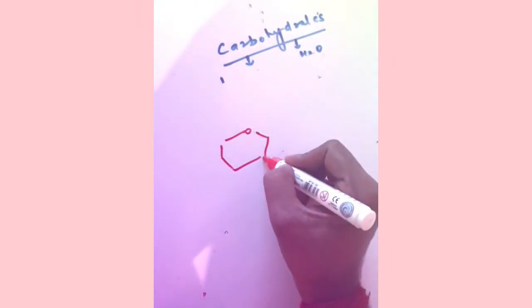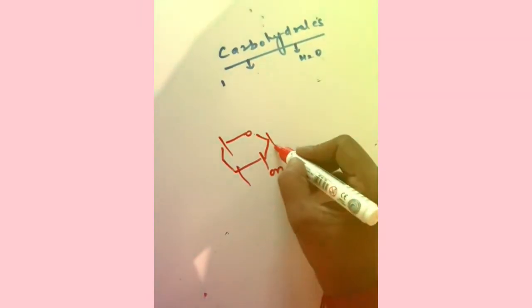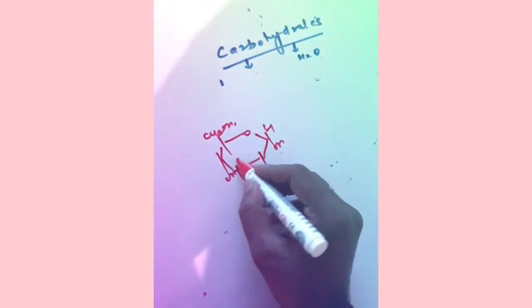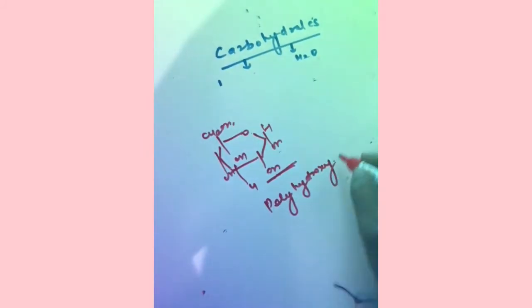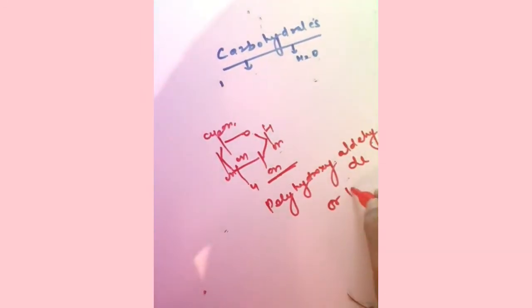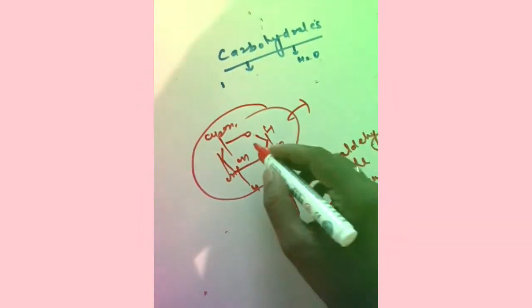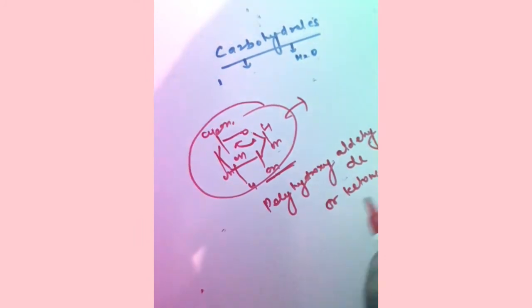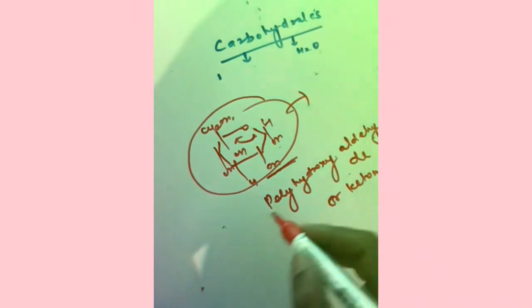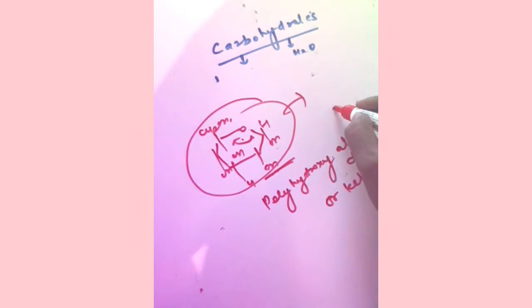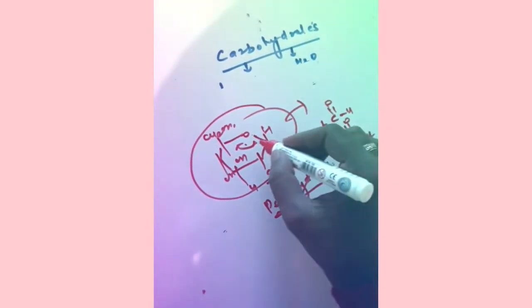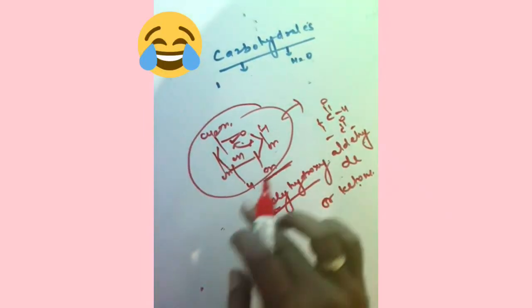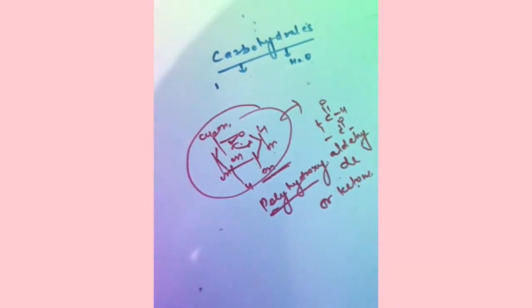These are the basic points regarding carbohydrates. If you look at the glucose molecule, there are lots of hydroxyl (OH) groups present — so they are polyhydroxy compounds. Carbohydrates are also either aldehydes or ketones. This is the cyclic form, but when the ring opens, it is converted to either a ketone or an aldehyde. So the simple definition is: carbohydrates are polyhydroxy aldehydes or ketones.